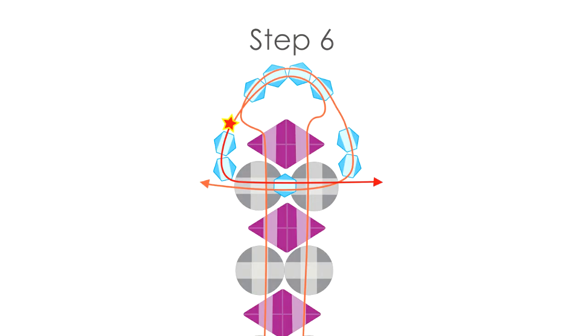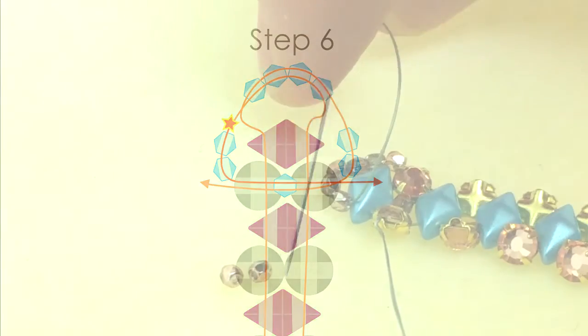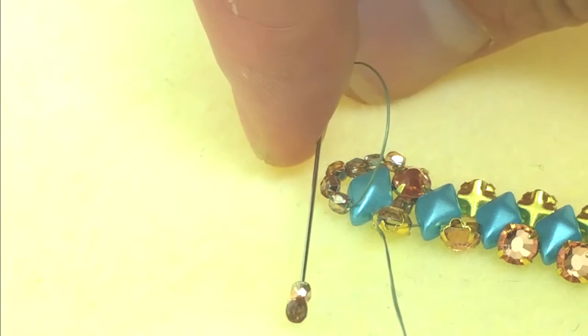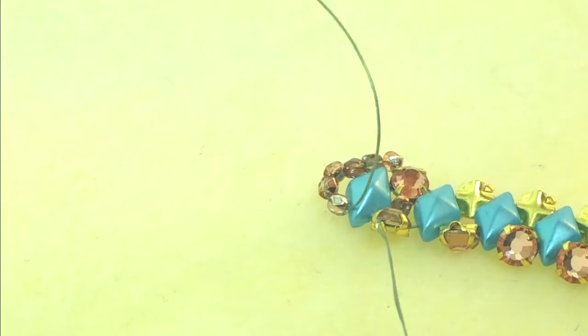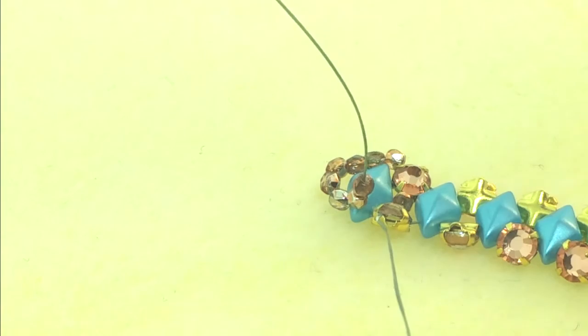Step 6. Thread those same beads using the other length of thread but going in the opposite direction. So you're going to re-thread the Rosemonte, the 2 tiny in the middle and the Rosemonte. Pull both threads to tighten.